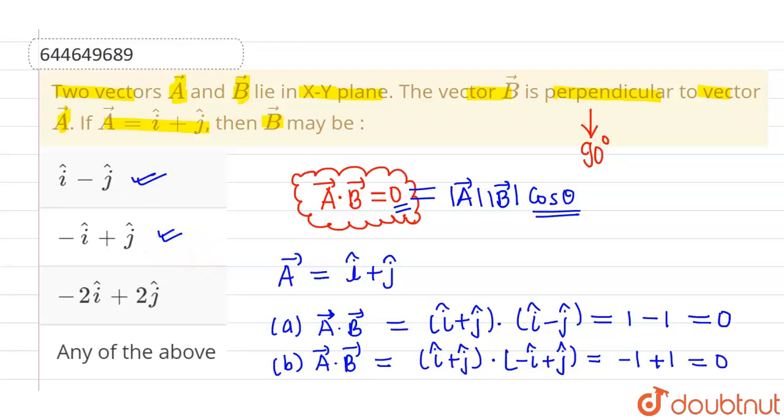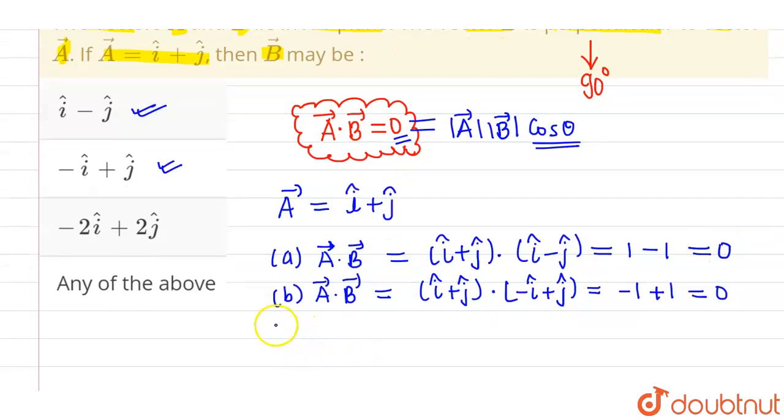Now coming to third option, let us try to again calculate the dot product. Now A vector is given as i cap plus j cap, and in the given option, let it be B vector which is given as minus two i cap plus two j cap. Now again if I calculate dot product, this will be minus two plus two which again comes out to be zero. So third option is also correct.